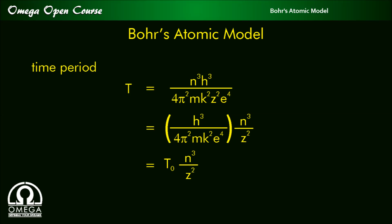The term inside the bracket is a constant and can be replaced by t₀. Our expression then becomes t is equal to t₀ × n³/z², where t₀ is equal to h³ / 4π²mk²e⁴.